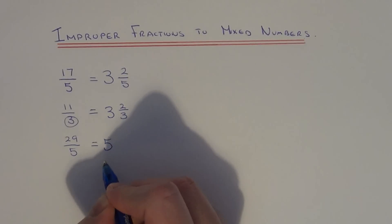So that goes 5 times. The remainder will be 4. That goes on the numerator, and you keep the denominator the same.